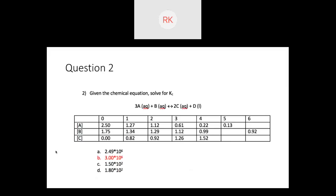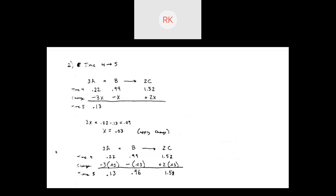For number two, this is a classic chart problem. You will definitely be expected to do one of these. Each time point is like a new almost-equilibrium. The answer here comes out to B. The first data set we use is experiment four to time five, because we want to fill in the data at time five. We write our equilibrium expression: 3A + B → 2C. We leave out D since it doesn't appear in concentration. We write the known data for time four as the initial point.